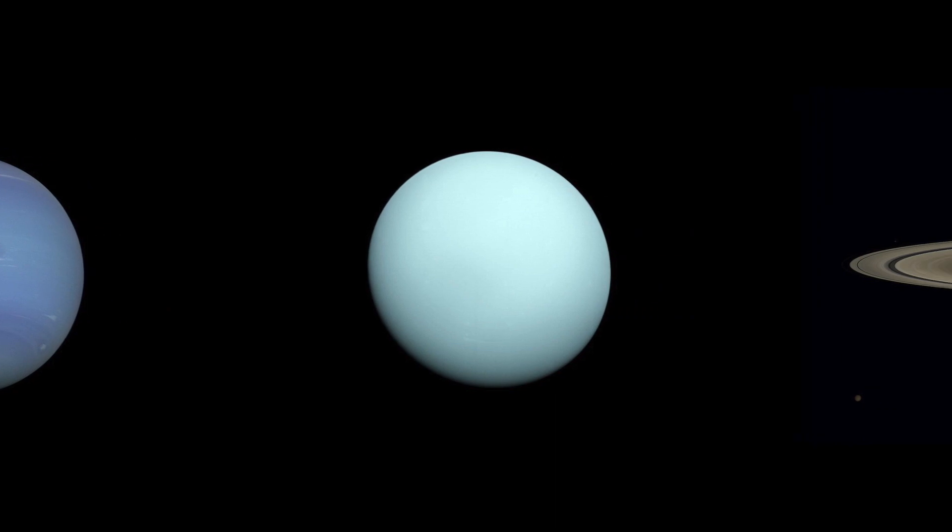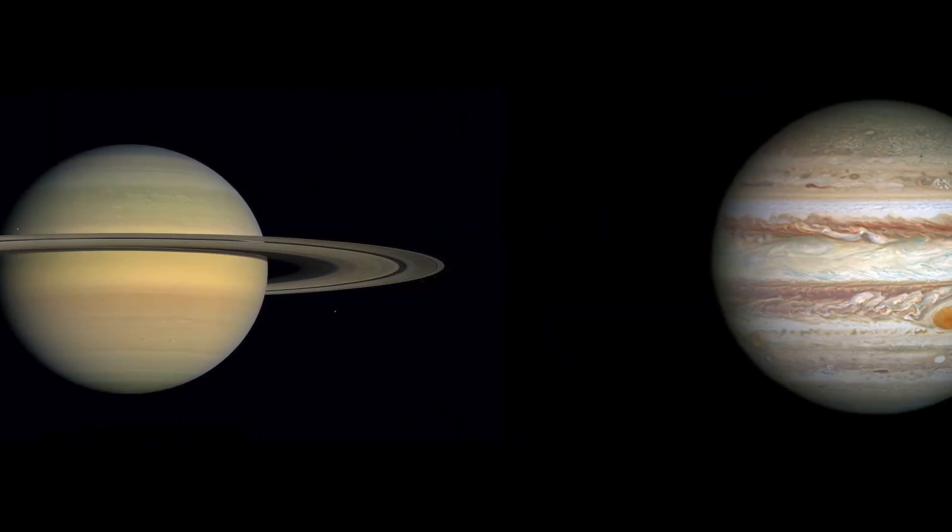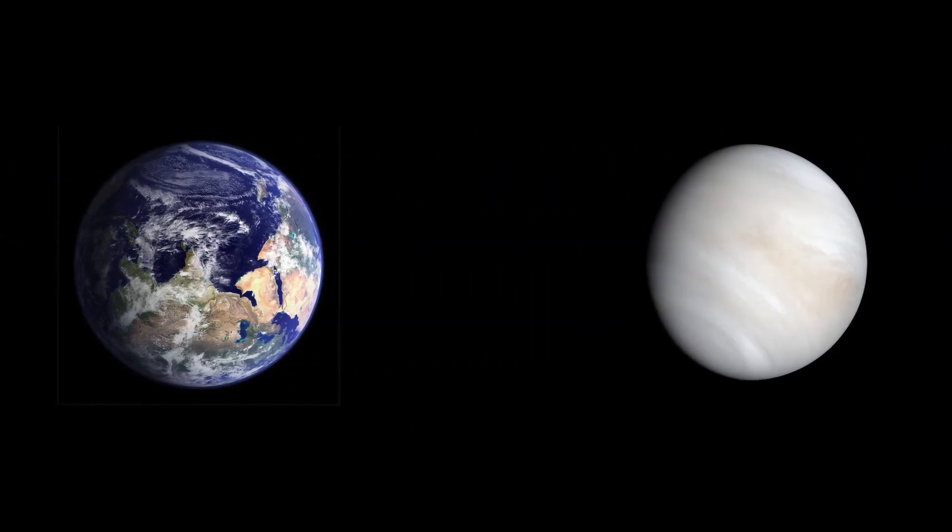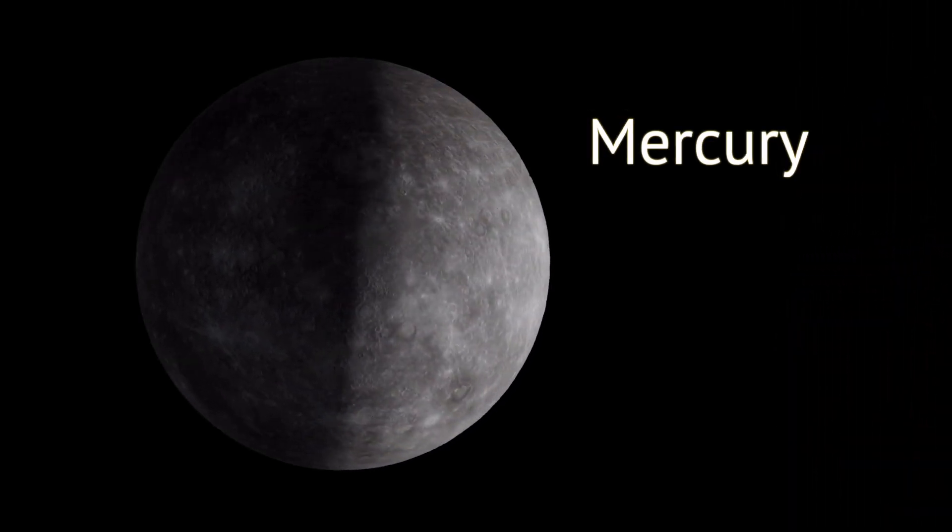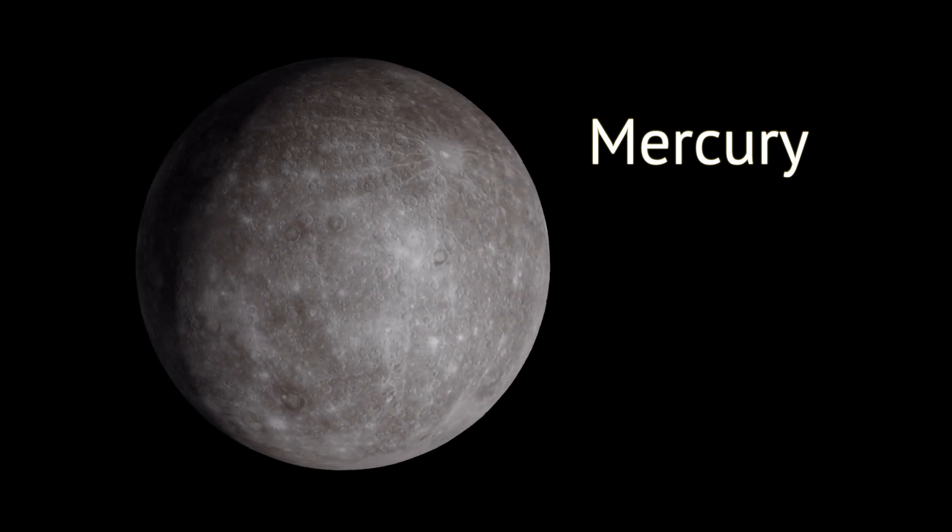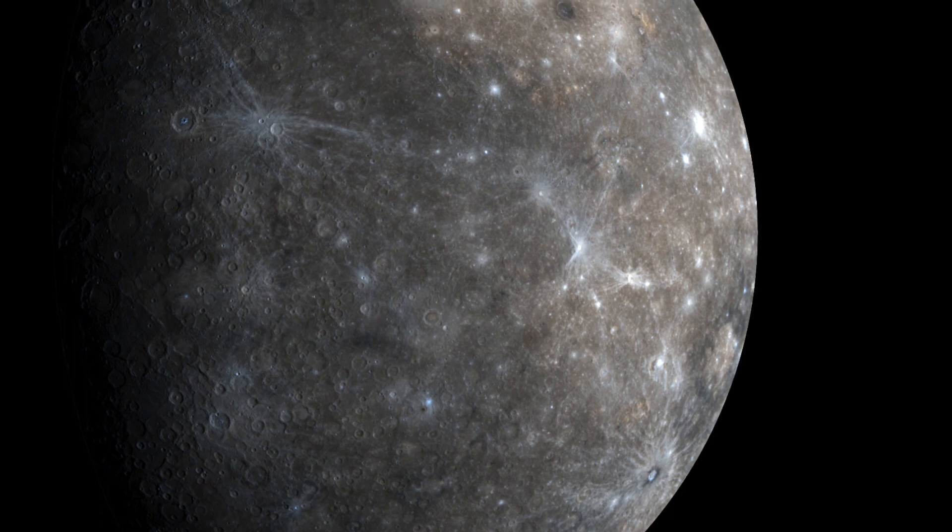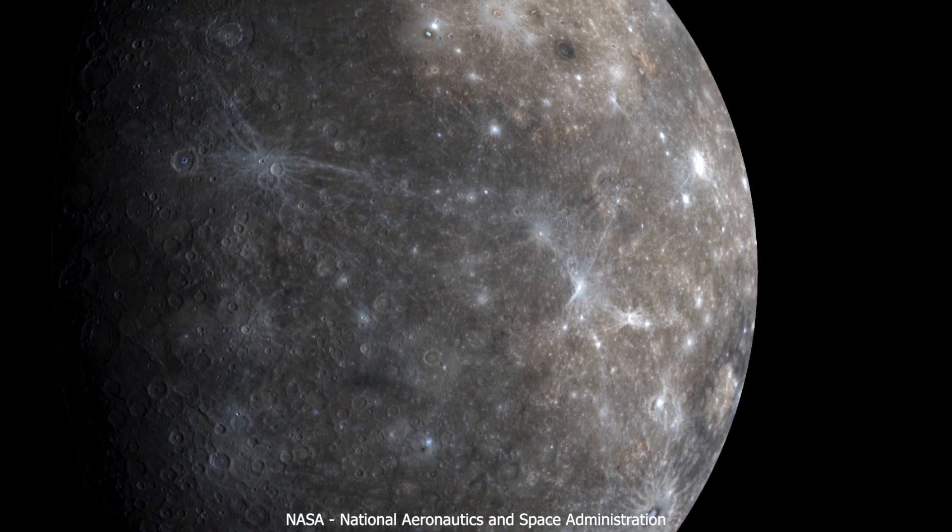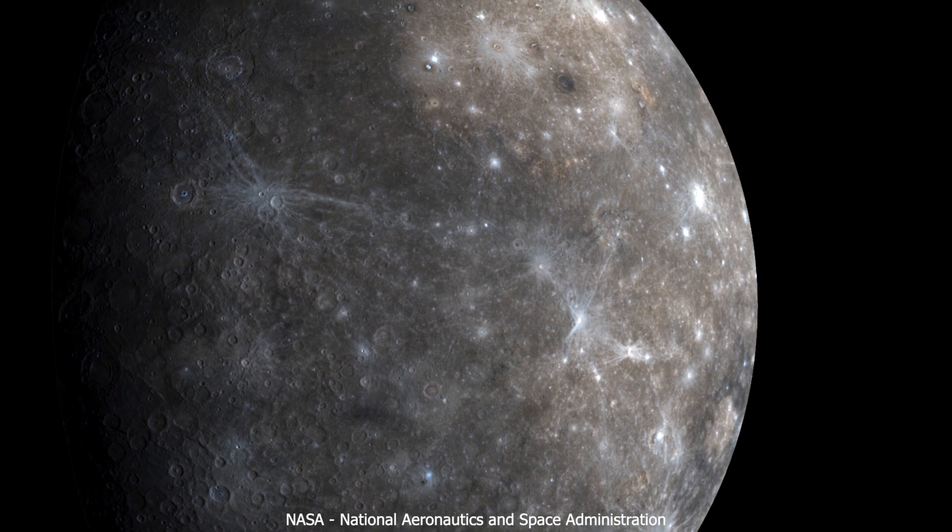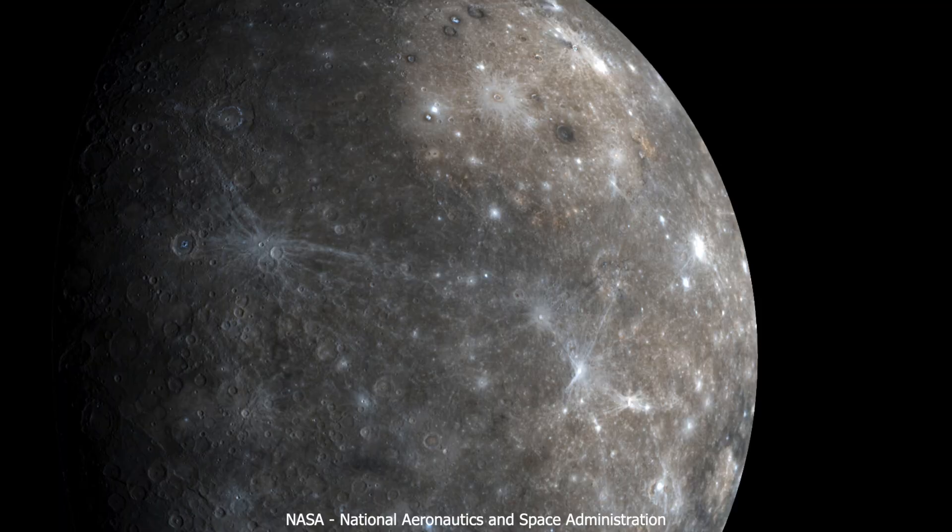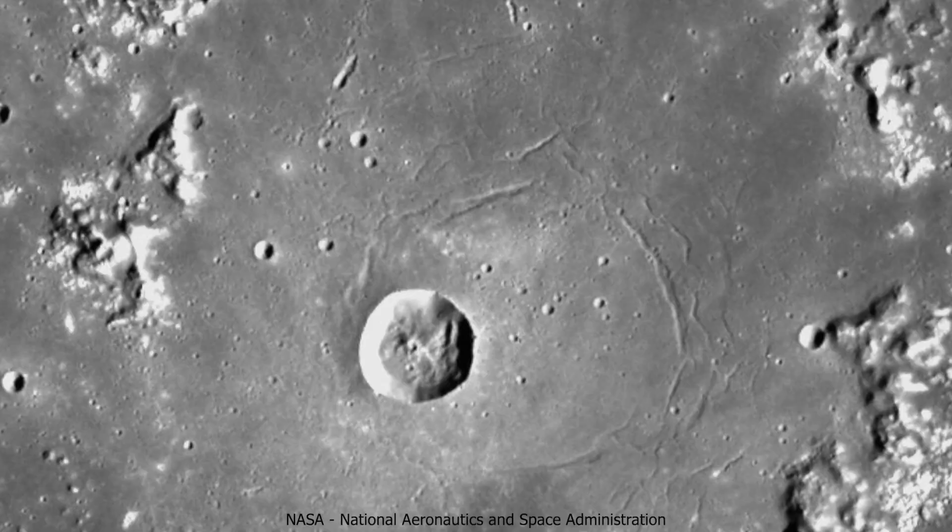Eight main planets have survived to this day. It has not been an easy life. All of them have been pummeled by meteors and blasted by solar radiation for billions of years. None of them bear more scars than Mercury, the smallest planet and closest to the Sun.